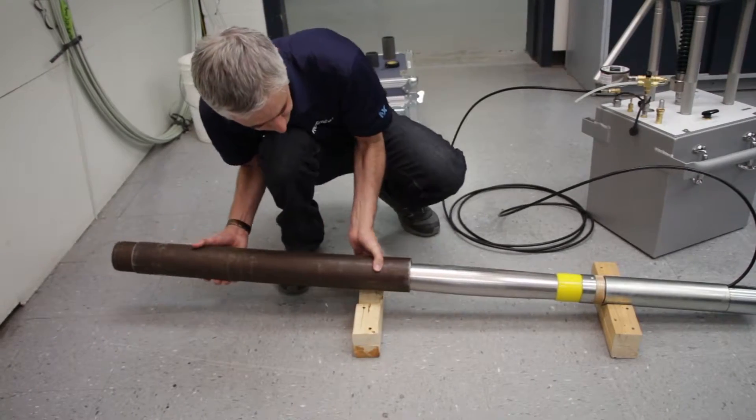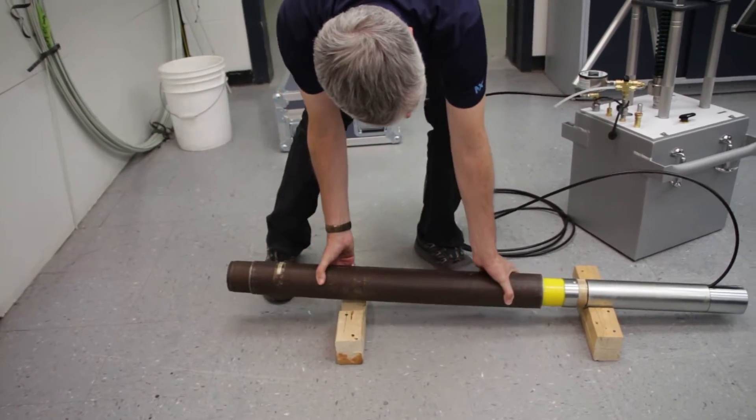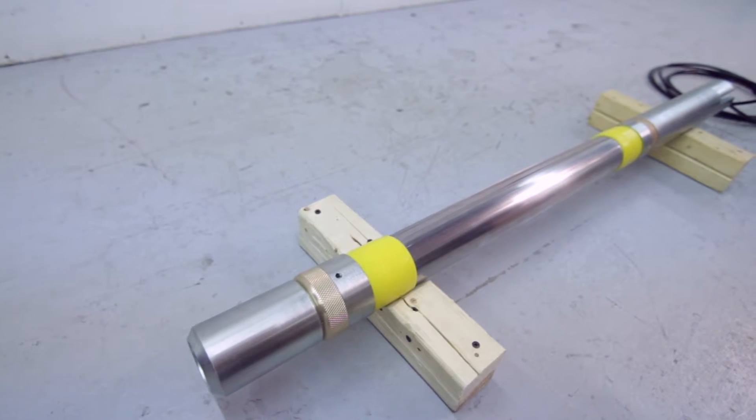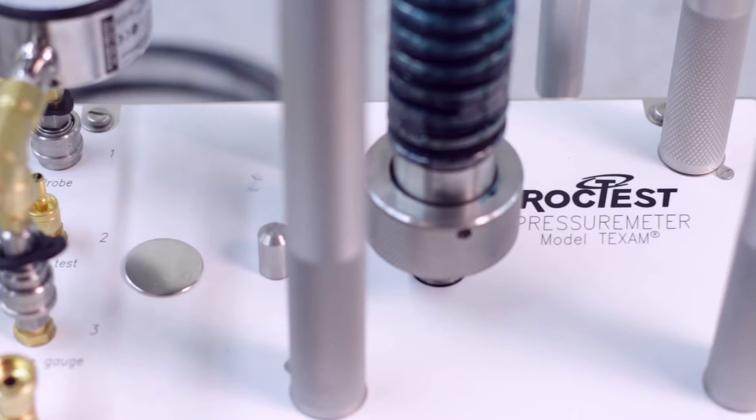The calibration for pressure correction and volume correction can also be done in your office or lab. Now that your calibrations are done, your Texan is ready to be used in the field.